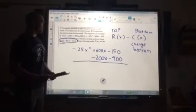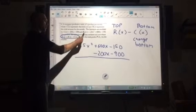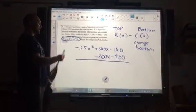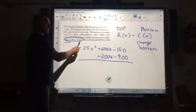Topic 27, question 4. I have two functions, c of x and r of x, and we want to find p of x. It says p of x is r minus c.